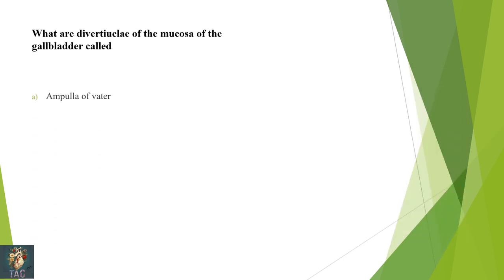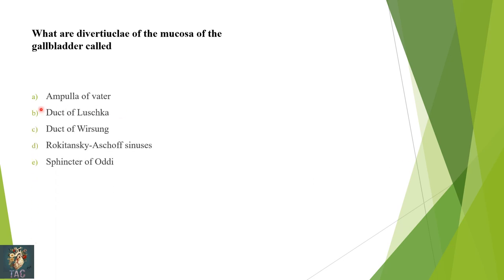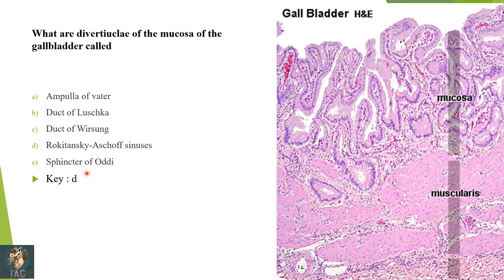Next: what are the diverticula of the mucosa of the gallbladder called — ampulla of Vater, duct of Luschka, duct of Wirsung, Rokitansky-Aschoff sinuses, or sphincter of Oddi? In this diagram you can see the mucosa and its diverticula forming the Rokitansky-Aschoff sinuses.